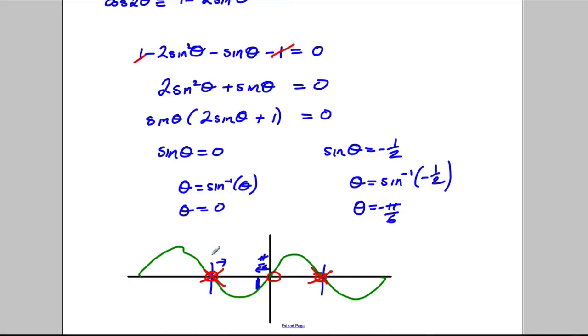pi by 6 forward. And this is from negative pi. So the other answer here would be negative pi plus pi by 6. So our values here, this would be negative 5 pi by 6. So our answers for theta.